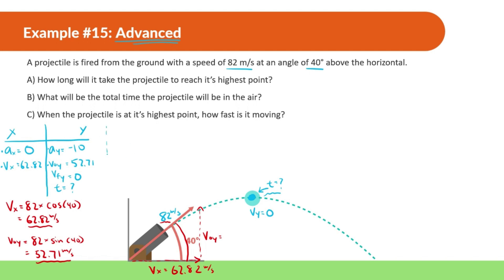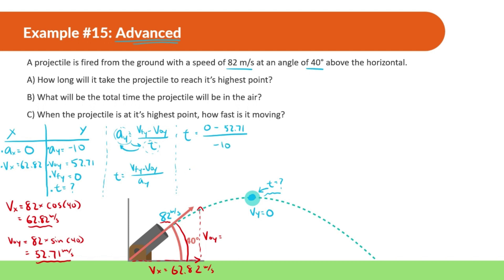Now that we have three pieces of information, we look at the formula: acceleration y equals v final y minus v initial y divided by t. Manipulating this, time equals v final y minus v initial y divided by a y. Plugging in: zero minus 52.71, divided by negative 10, gives us 5.27 seconds. So it takes 5.27 seconds for the velocity in y to equal zero — to reach its highest point.